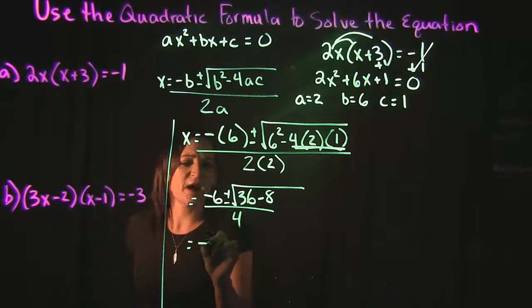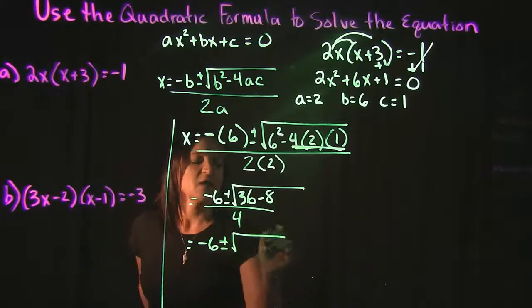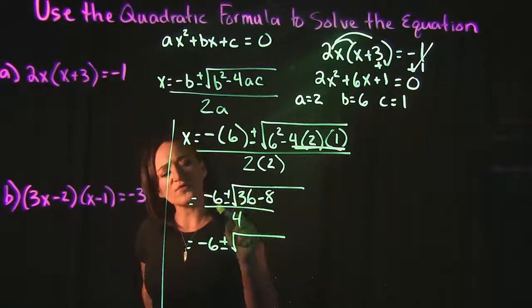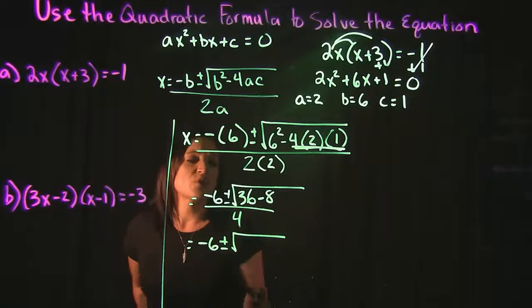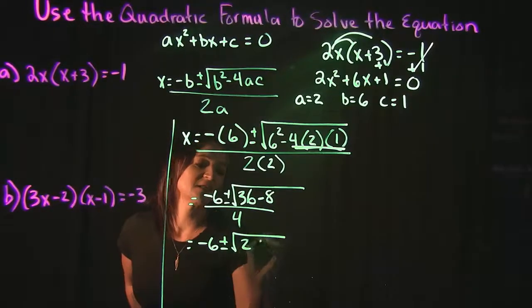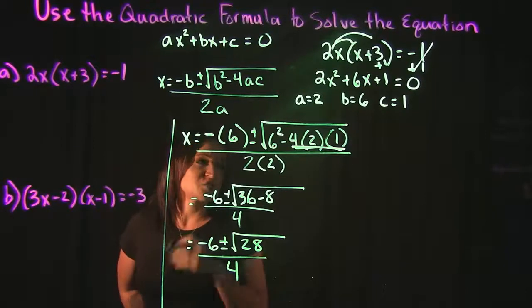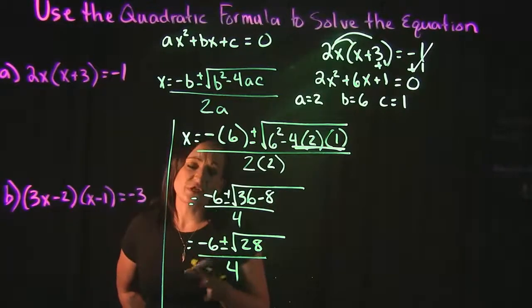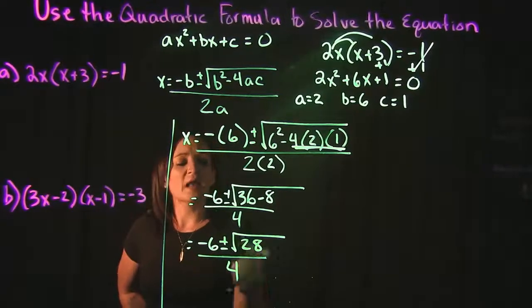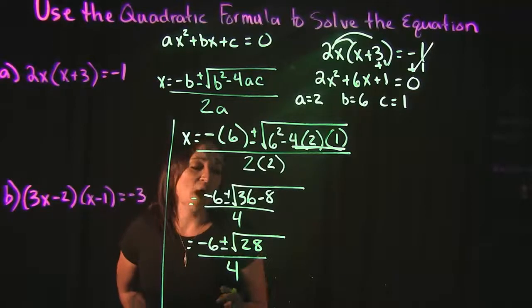Simplifying further under the radical: we have the square root of 36 minus 8. Well, 36 minus 8 is 28.